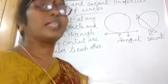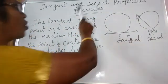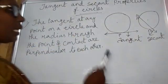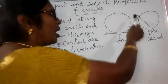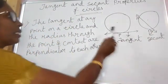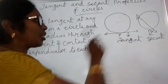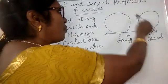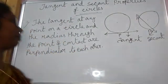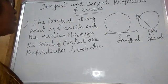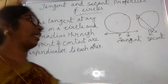Hi friends, today let us have tangent and secant properties of circles. Yesterday I already explained what is a tangent and what is a secant. The line which touches a circle at a point is the tangent of the circle, and the line which intersects the circle at two points is the secant of a circle. Today let us learn the properties of tangents and secants.